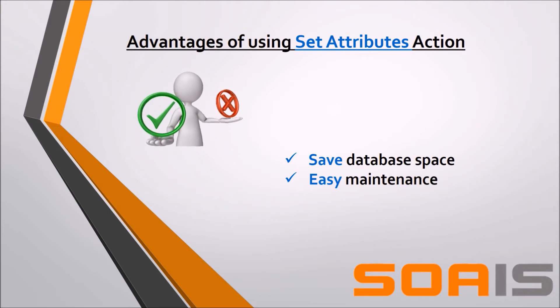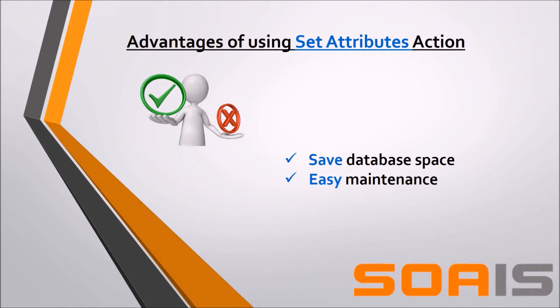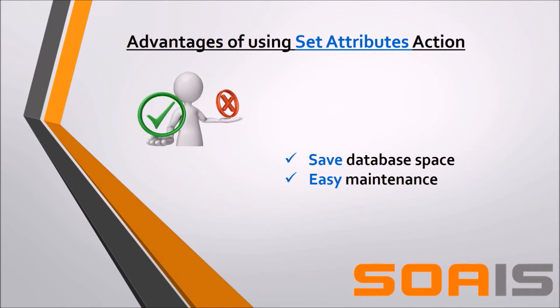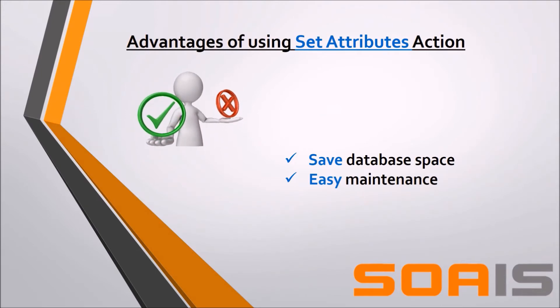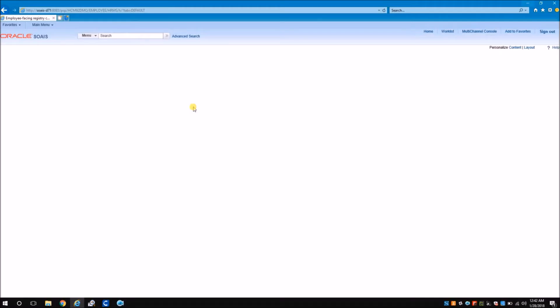If you live-touch all 300 menu links, those links are stored in the Certify database. The maintenance of these objects can be very difficult and time-consuming when there is a change. To avoid such issues, we are going to use the set attributes action to dynamically build the object during runtime.